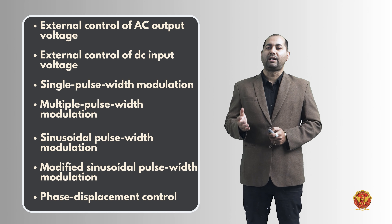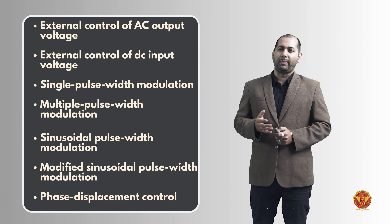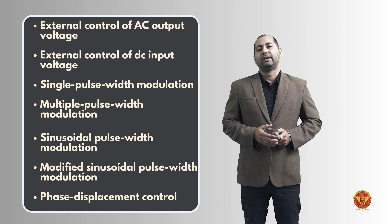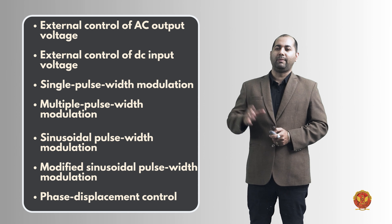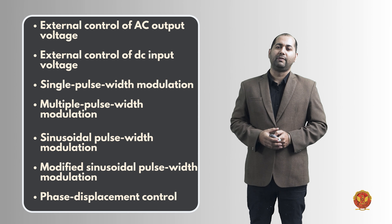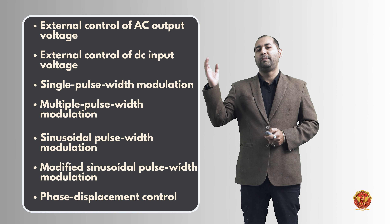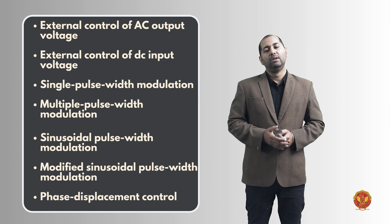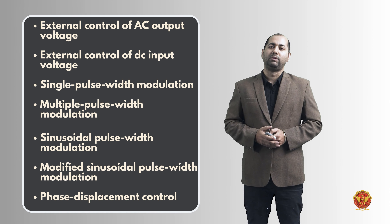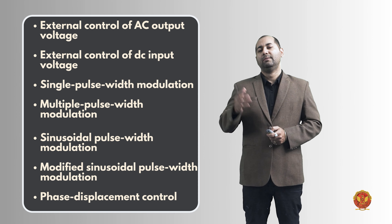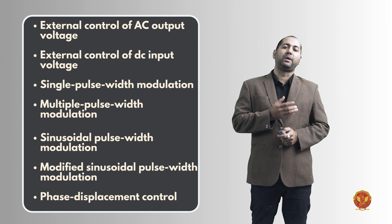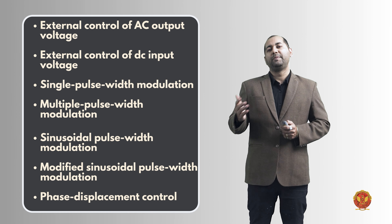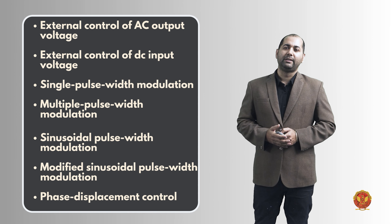We will understand the voltage control and external control of AC voltage. The external control method is a basic concept where we use external control parameters to operate our inverter, converting DC voltage to a desired output AC at the desired frequency. The second method is external control of DC input voltage, where we use an external control mechanism as per the required output and required load.